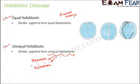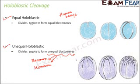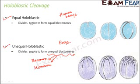Holoblastic means the division is complete — the structure is divided entirely. If the resulting blastomeres are equal in size, it is equal holoblastic; if they are unequal in size, it is unequal holoblastic. Unequal holoblastic cleavage takes place in organisms like frogs, amphibians, and lower fishes. Looking at the picture, cleavage is only happening towards the upper side, so even though the whole structure is divided, the output is not two exactly equal halves.